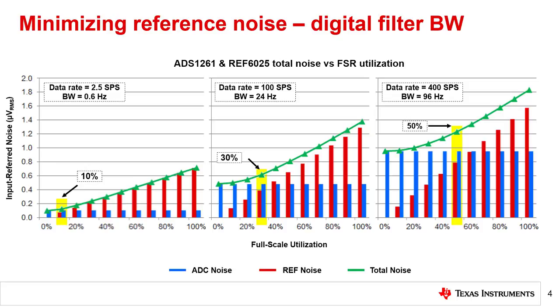So reducing your ADC bandwidth reduces the total system noise, but you also reach the dynamic range limit at a much smaller input voltage.